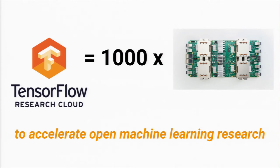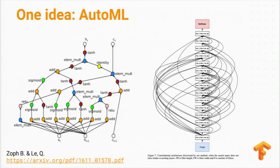If you'd like to learn more about this, feel free to chat with me afterwards. We think a lot more compute is going to unlock a lot of innovation — one example is where you're actually using machine learning algorithms to generate machine learning architectures, which has a kind of recursive element to it.